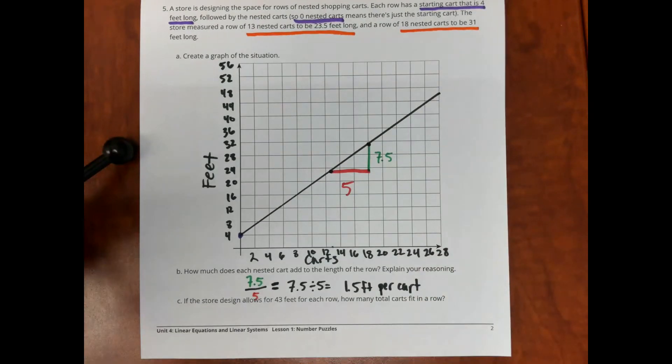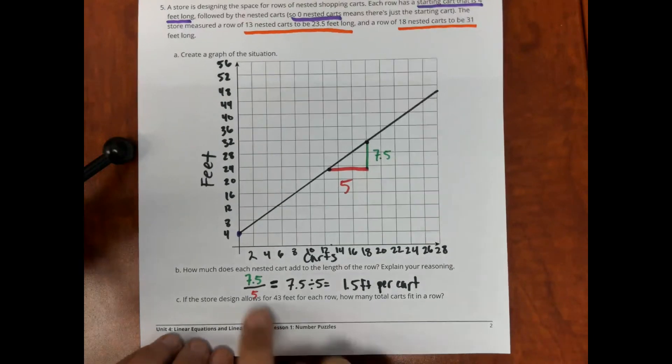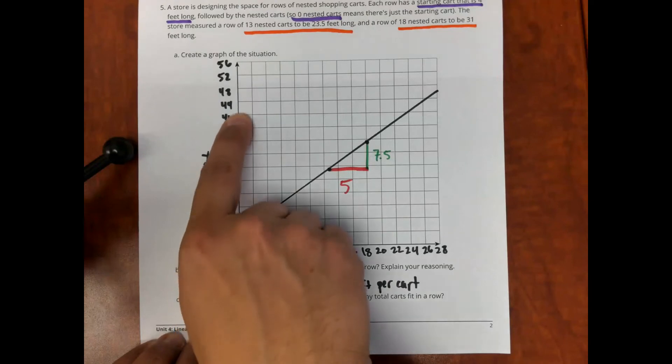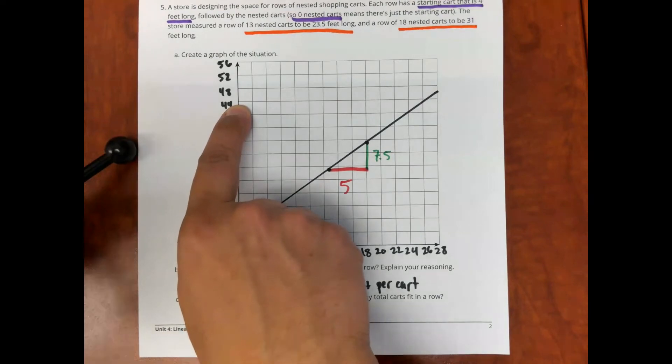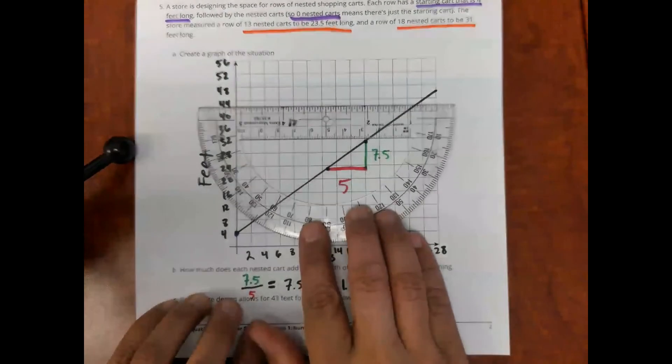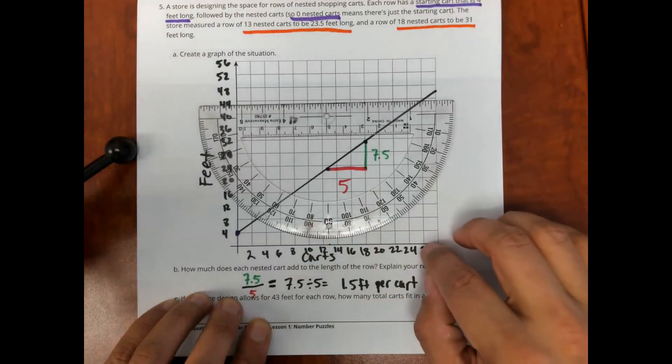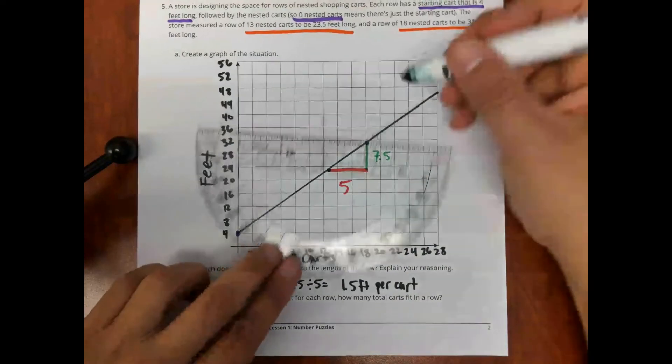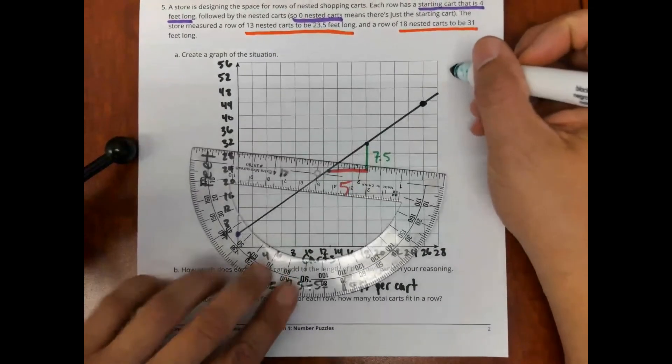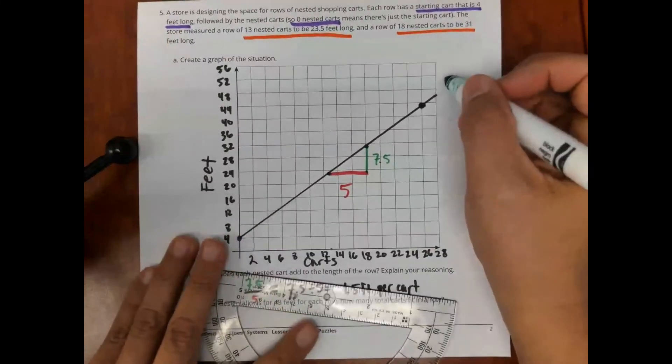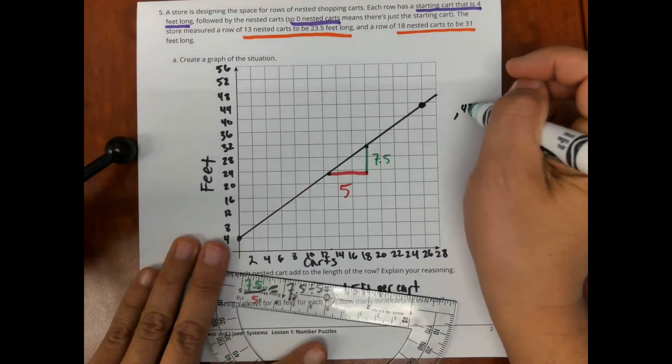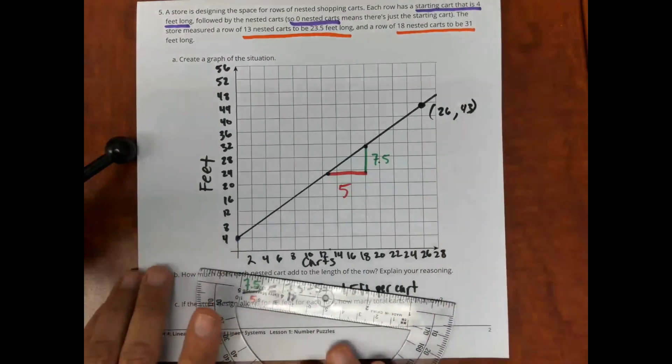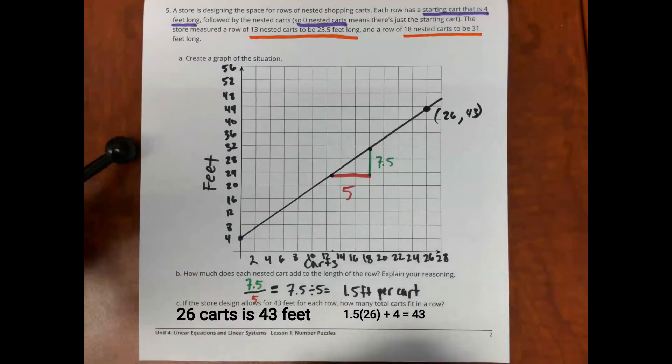Now, part C, if a store allows for 43 feet in each row, how many carts will fit in the row? Well, I can see that in the graph. Where is 43? 43 feet is right here. Where does that line up with the number of carts? Right there, which is right here with 26. So, that point here, I'm going to do it in black. So, that's this point right here. This point right here is 43 feet and 26 carts. That's one way to do it, as you see it on the graph.